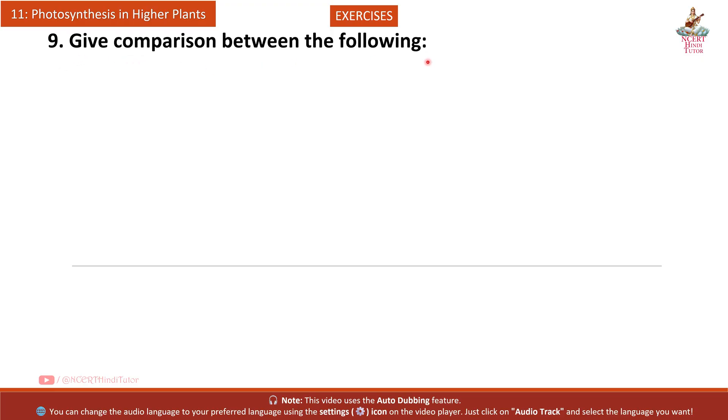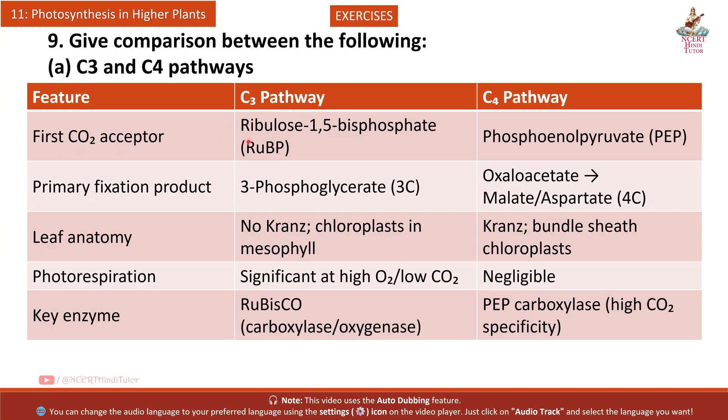Question 9: Give comparison between the following. A: C3 and C4 pathways. CO2 acceptor - C3 pathway: Ribulose 1,5-bisphosphate RuBP; C4 pathway: Phosphoenolpyruvate PEP. Primary fixation product - C3 pathway: 3-phosphoglycerate 3-carbon; C4 pathway: Oxaloacetate, Malate, Aspartate 4-carbon. Leaf anatomy - C3 pathway: No Kranz, chloroplasts in mesophyll; C4 pathway: Kranz, bundle sheath chloroplasts.